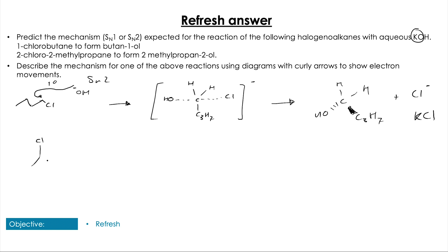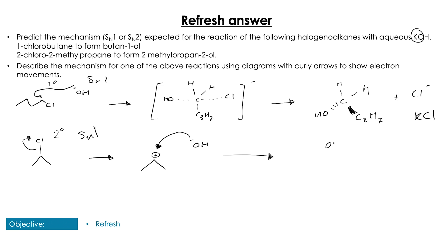Because we've got Cl- and it reacted with KOH, we're going to have KCl. With 2-chloro-2-methylpropane, we have our secondary, so you could have picked SN1 or SN2 — I'm going to do SN1 here just to show both. We're going to have the stable intermediate carbocation and then the hydroxide will attack, forming our alcohol product. Both reactions are going to form KCl as their byproduct.